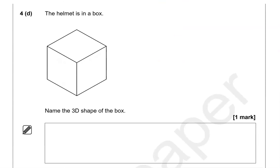The helmet is in a box. Name the 3D shape of the box. Looking at this, it's like an ice cube or sugar cube, so it is a cube.